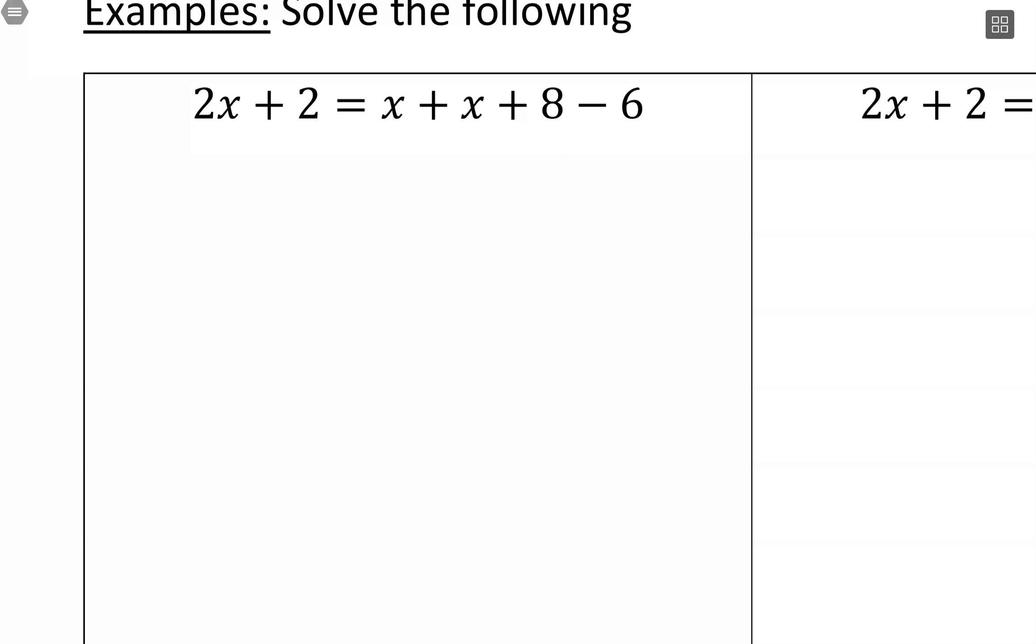I'm going to solve this equation here. I'm going to simplify that right-hand side. So x plus x is 2x. 8 minus 6 is positive 2. And what you might already be noticing is that we have the same thing on both sides of the equation.